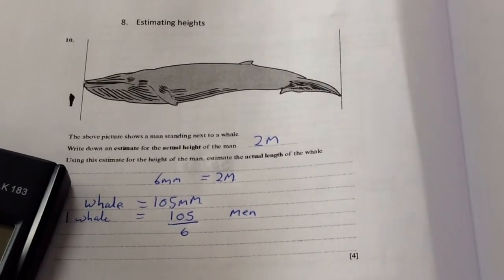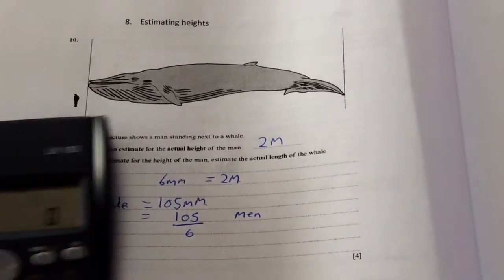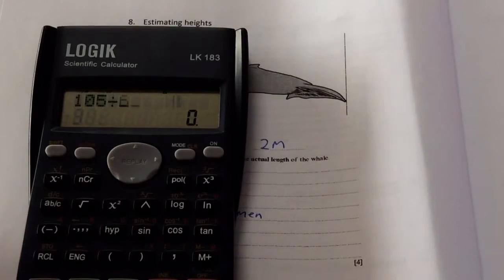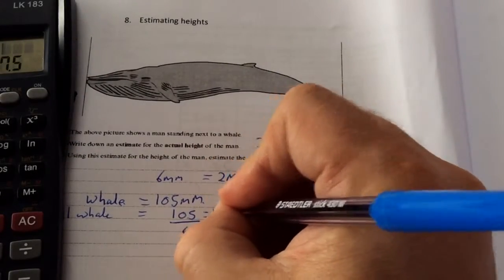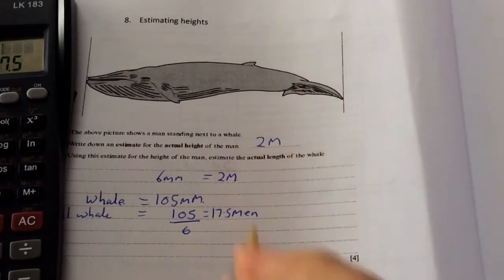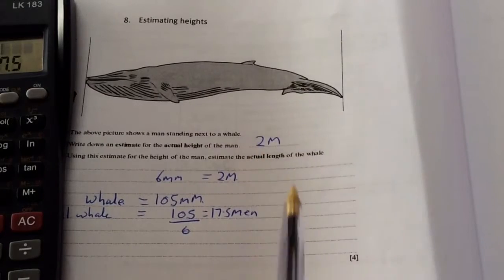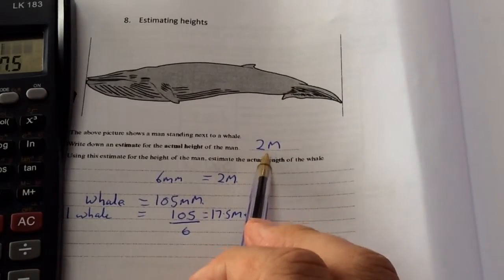So 105 divided by 6. When I'm typing in 105 divided by 6, it gives me roughly 17.5 men. And then because each man is roughly 2 metres.